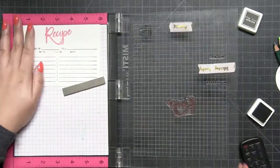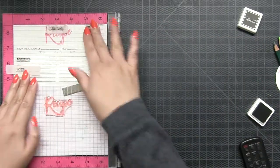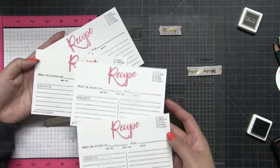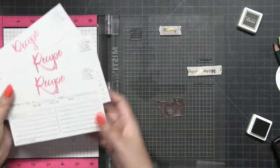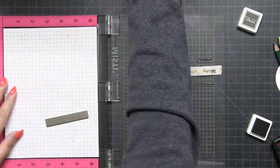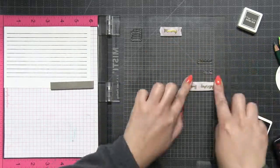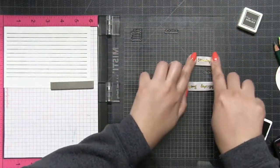I included this bit in the video because I want to show you how I mask the stamps on the MISTI to stamp some of the words on the front of the card and then some of the words on the rear of the card. So here, as soon as I'm finished stamping the front of the card, I just mask these three stamps with some washi tape to continue stamping behind my recipe card.